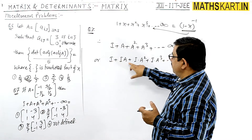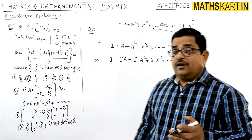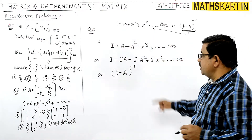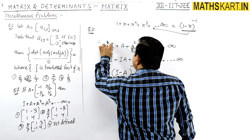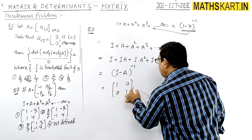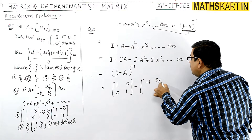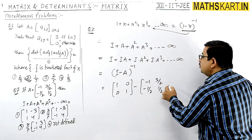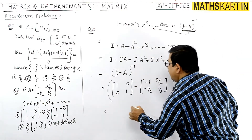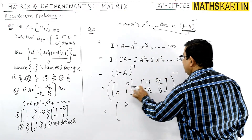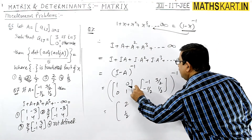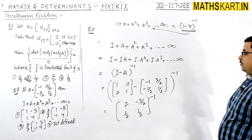So this is the expansion of (I − A)^(−1). Now we have to compute I − A. That gives us the matrix: [1−(−1), −3/2 / −(−1/2), 1−1/2] = [2, −3/2 / 1/2, 1/2]. We now need to find the inverse of this matrix.